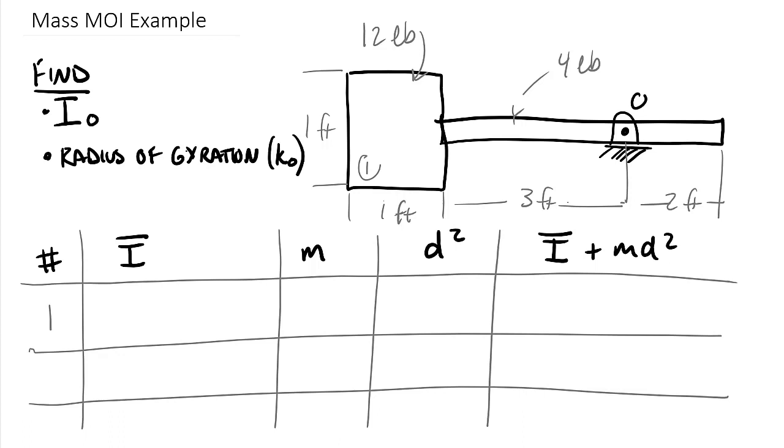We have two subshapes and we'll add things together down those columns. So we have subshape one, which is that square, and subshape two, which is the slender rod.